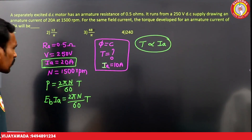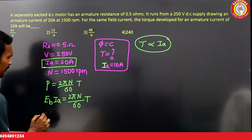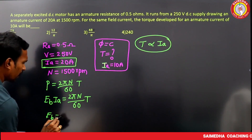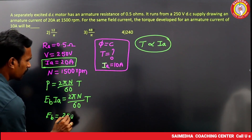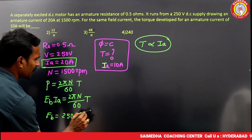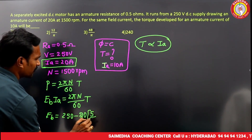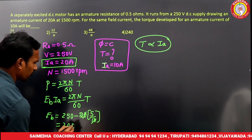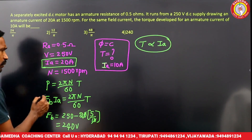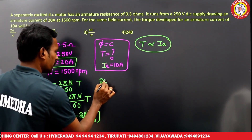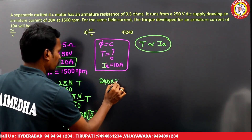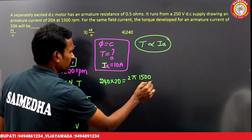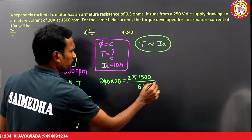Eb = V − Ia × Ra = 250 − (20 × 0.5) = 240 volts. Substituting: 240 × 20 = (2π × 1500/60) × T.